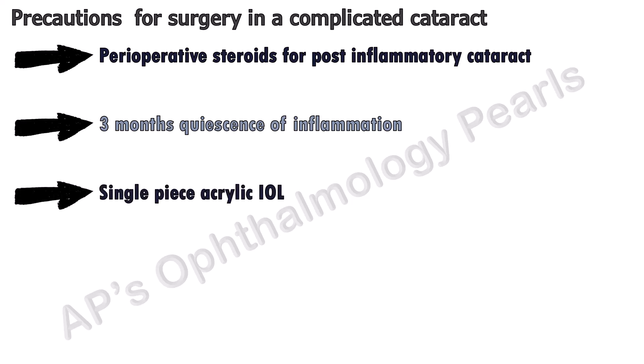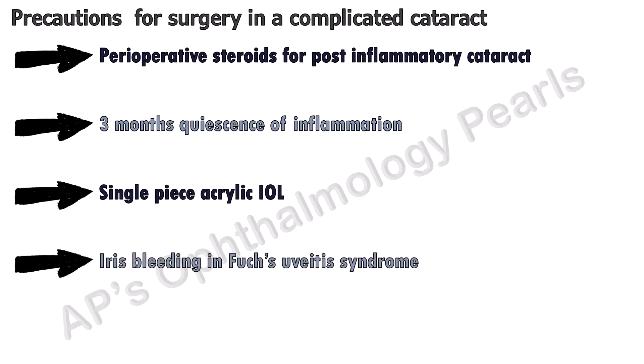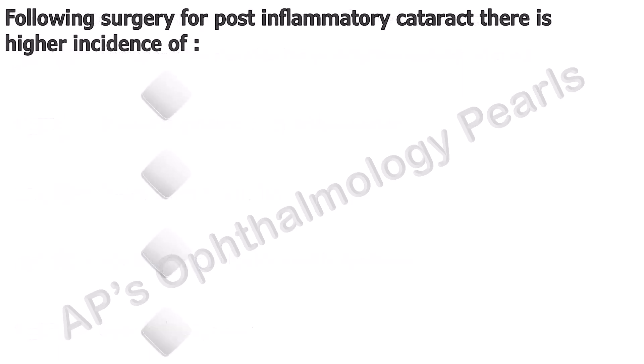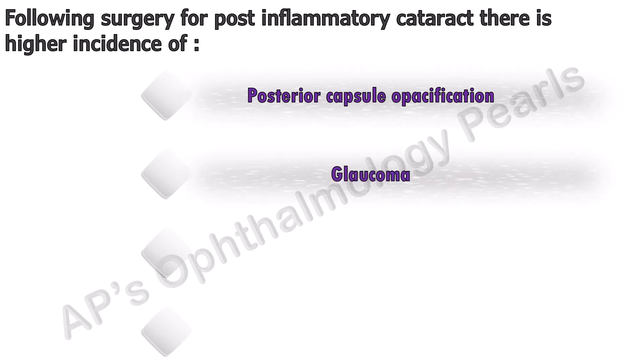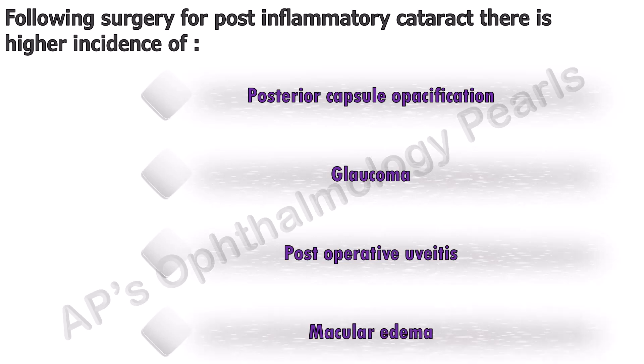A single-piece acrylic IOL is the most suitable in terms of reduction of complications such as post-operative cystoid macular edema and posterior capsular opacification. Hemorrhage from the iris can occur when there is neovascularization of the iris, such as in Fuchs heterochromic iridocyclitis, and a guarded visual prognosis must be given and informed consent taken prior to surgery. Following surgery for post-inflammatory cataract, there is a higher incidence of posterior capsular opacification, glaucoma, post-operative iridocyclitis, and macular edema.